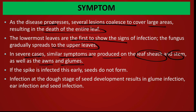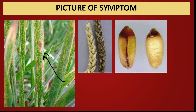In severe cases, similar symptoms appear on leaf sheath, stems, awns, and glumes. If spikes are infected early, no seed formation occurs. If infection comes late after seed formation, glumes, ears, and seeds show symptoms — brown spots of variable size.